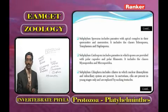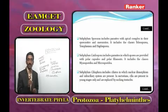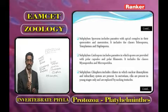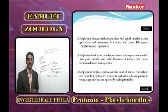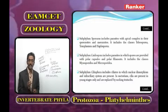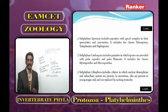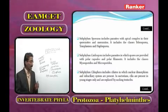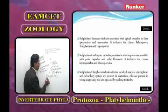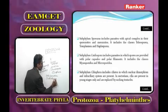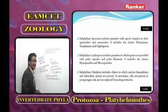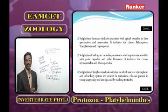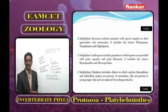Sporozoa is classified into three classes. The first is Telosporea — the infective stage is the elongated sporozoite; example is Plasmodium. The second is Toxoplasmea, which reproduces asexually by endodyogeny — the parent cell converts into two daughter cells; example is Toxoplasma.